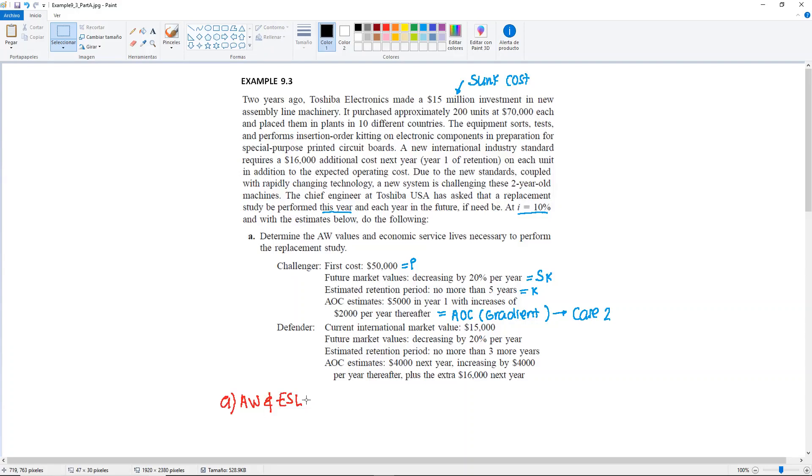Still in letter A, we're going to follow a similar procedure for the Defender. Let's take a look at what we're given. We have the international market value. Please remember, for the Defender, you're going to be using the market value as your P. We are given the original price, the $15 million, but it's a sunk cost because it happened two years ago, and we're only concentrating on the values that are current during the time of the analysis.